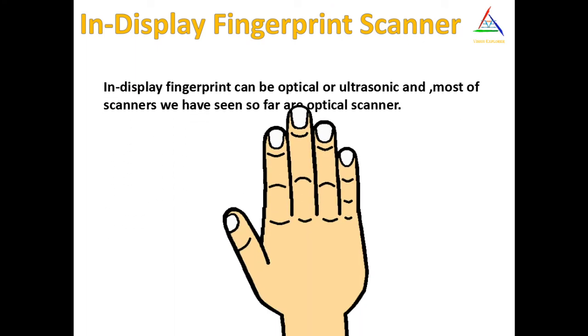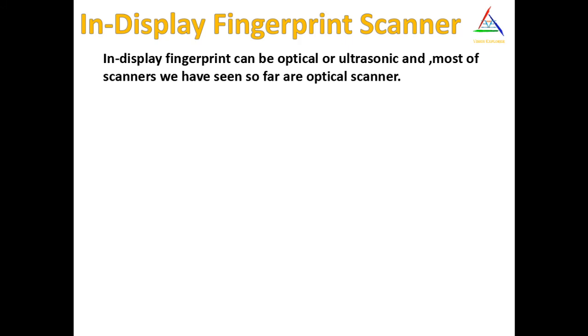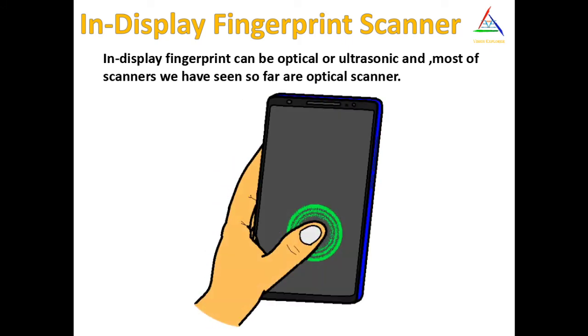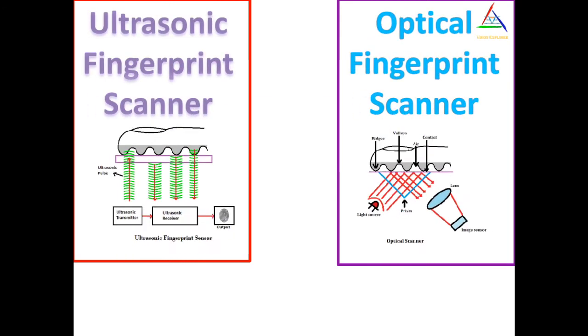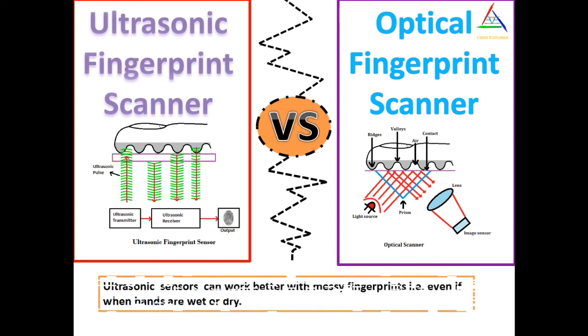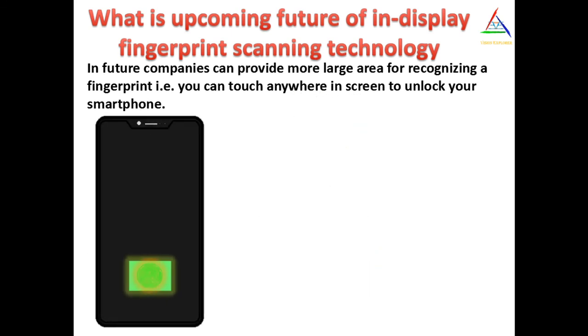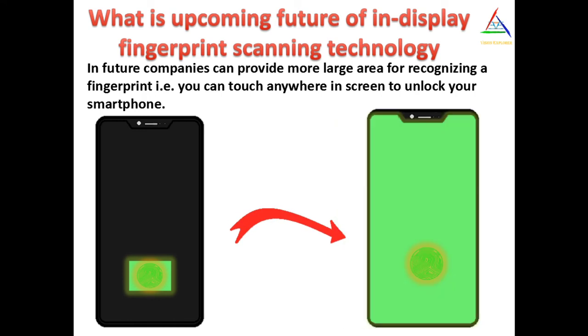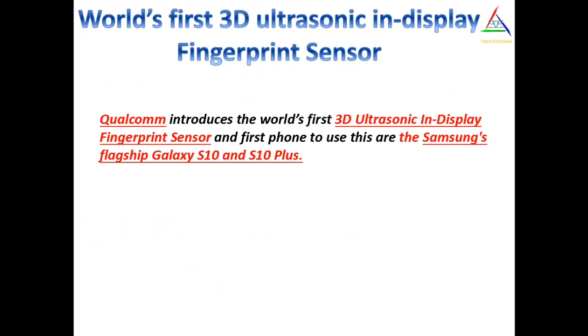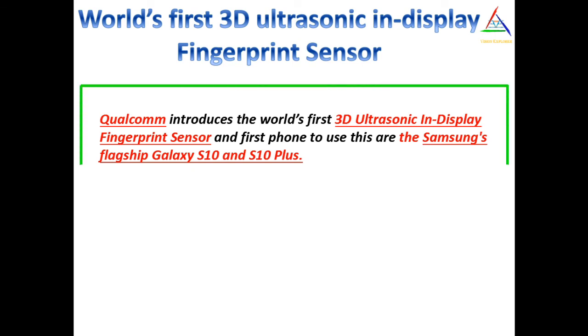In-display fingerprint scanners can be optical or ultrasonic. Most of the in-display scanners we have seen so far are optical scanners. In comparison to optical scanners, ultrasonic sensors can work better with messy fingers, even when hands are wet or oily. But till now, there is no option in in-display fingerprint scanners where you can touch anywhere on the screen to unlock your smartphone. Qualcomm was the first to introduce the world's first 3D ultrasonic in-display fingerprint sensor, and the first phone to use this was Samsung's flagship series — the Galaxy S10 and S10+.